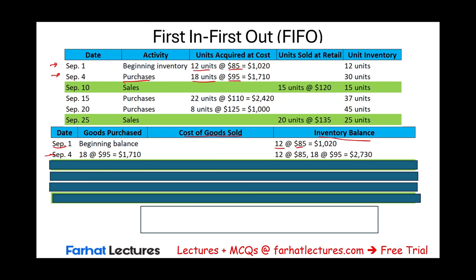Now let's take a look at LIFO — last in, first out. We're using the same example. Starting with 12 units at $85, we purchased 18 units at $95, giving us 12 at $85 and 18 at $95, total inventory $2,730. We sold 15 units. Under LIFO we sell the last units in first — 15 units from the $95 batch — costing $1,425. What remains: 12 at $85 and 3 at $95. On September 15th we purchased 22 units at $110 — now we have three layers of inventory.